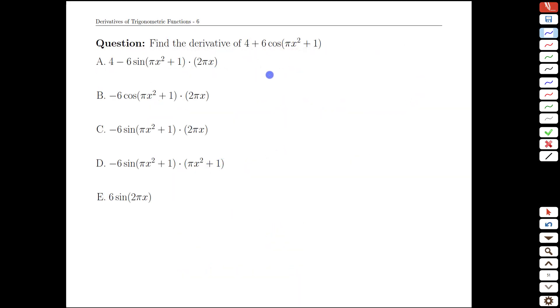As a quick practice challenge take a look at this function here and see using the derivative of trig functions now and the chain rule can you identify the derivative here in the list. I'll pause for a second then we'll come back. All right the derivative of four plus six cosine of pi x squared plus one is going to be derivative of a constant by itself is zero the six is a multiplier so it stays around.